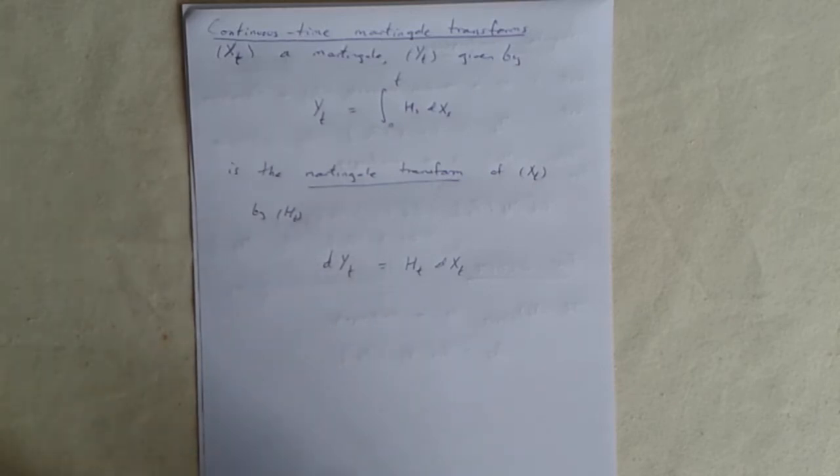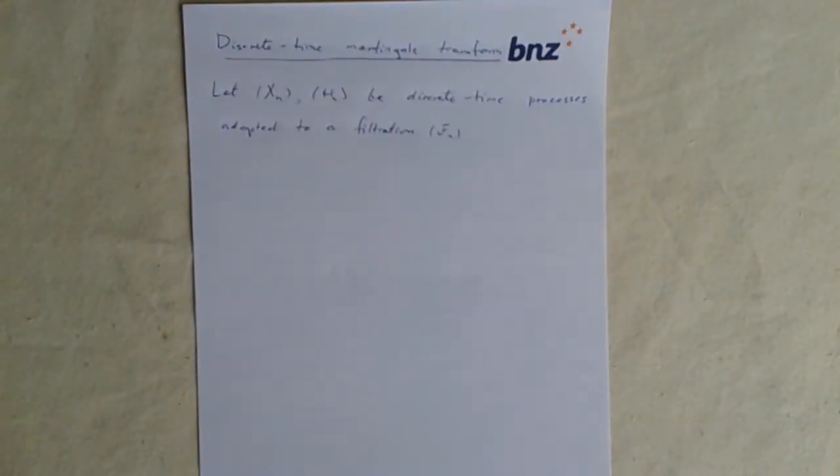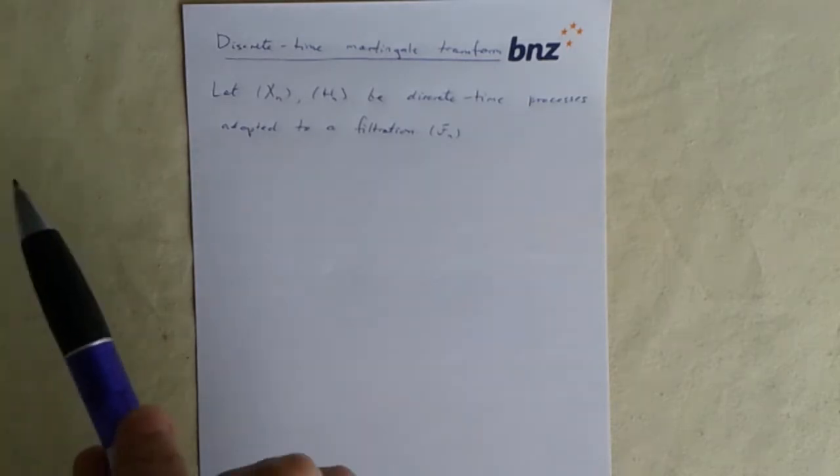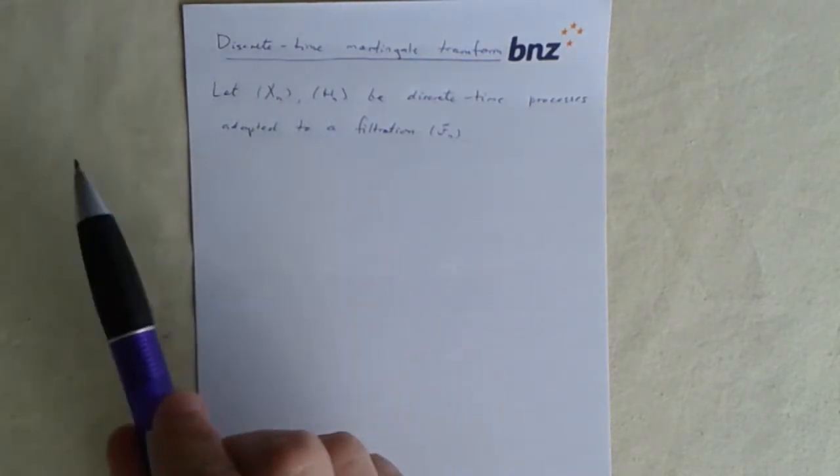That's the continuous time Martingale transform, but it's worth separately considering the discrete time version because this is something we'll also be looking at quite a lot just as a discrete time thing. Let's say we've got processes xn and hn, so now they only depend on an integer n, that is they're random sequences, not random functions.